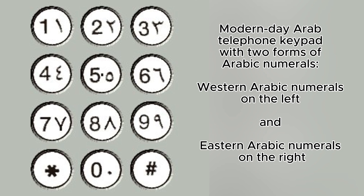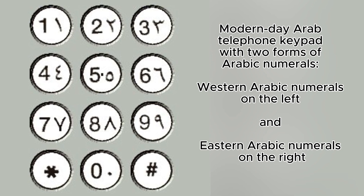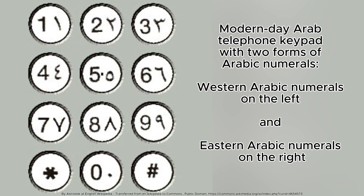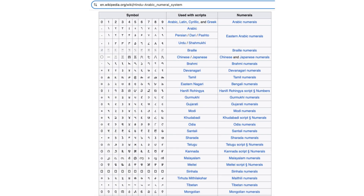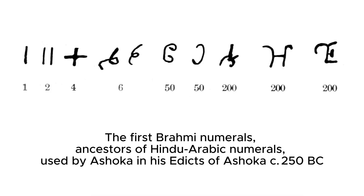The Arabic numeral system, comprising digits 0 through 9, represents one of history's most profound mathematical innovations. Despite its name, this system originated in India between the 1st and 4th centuries.